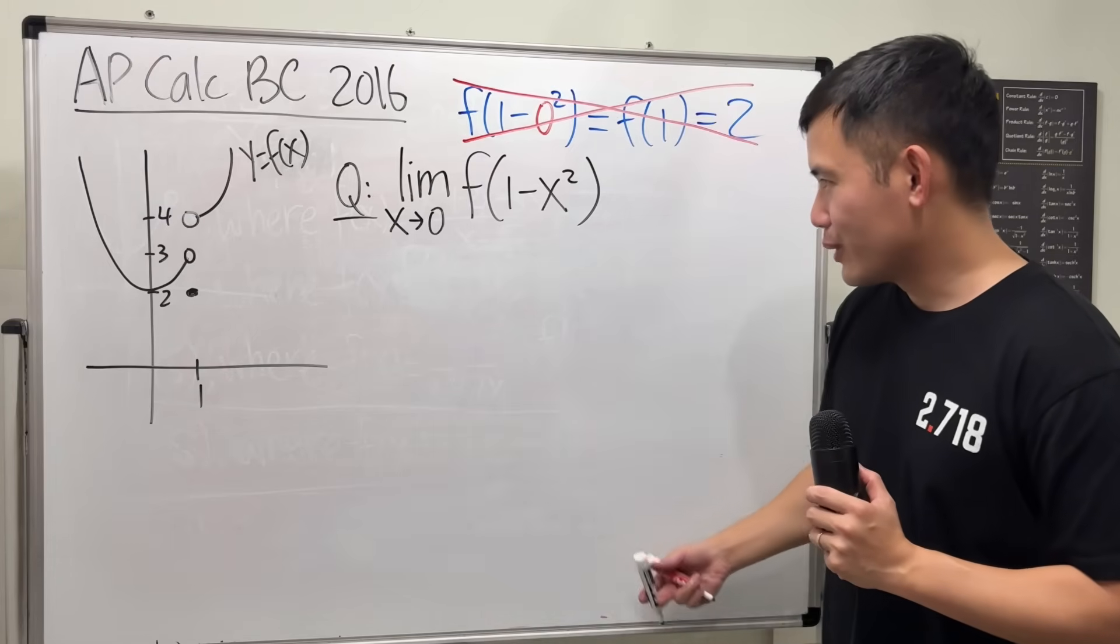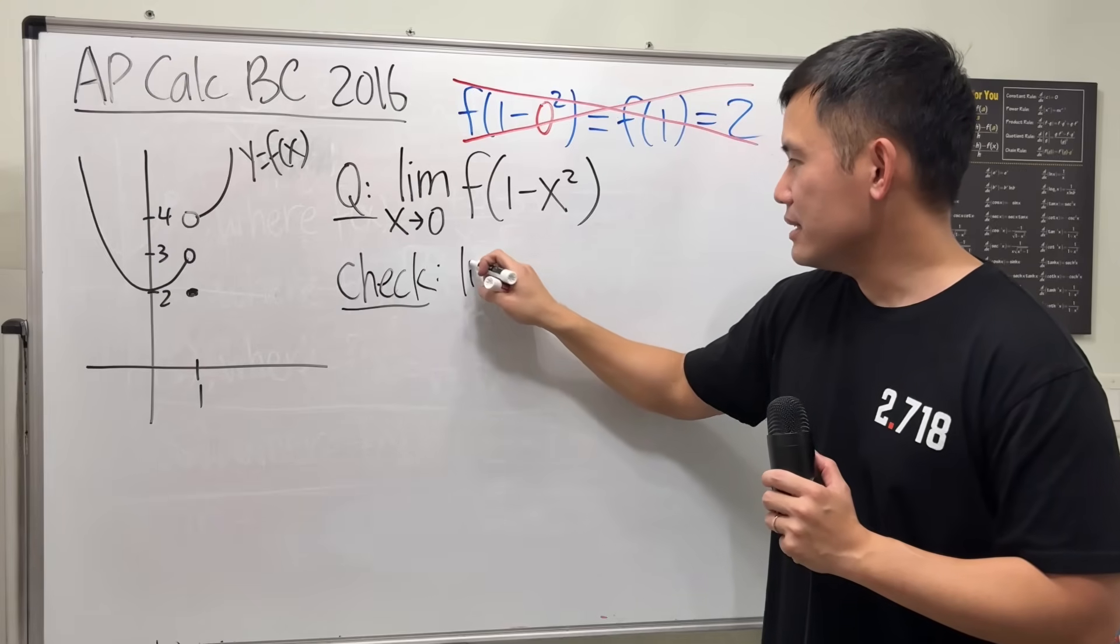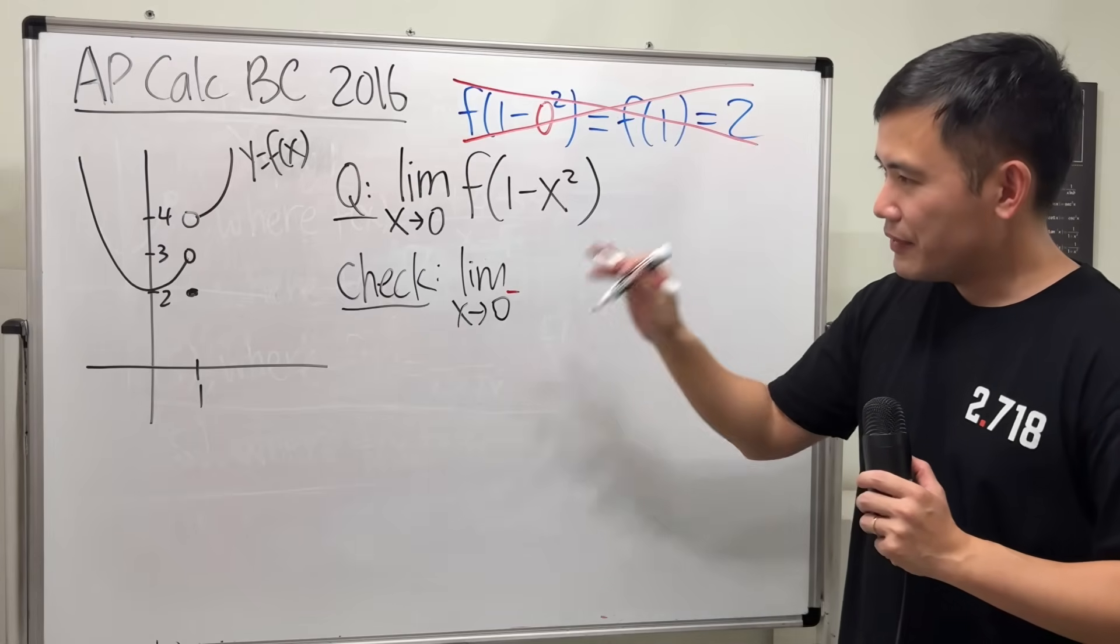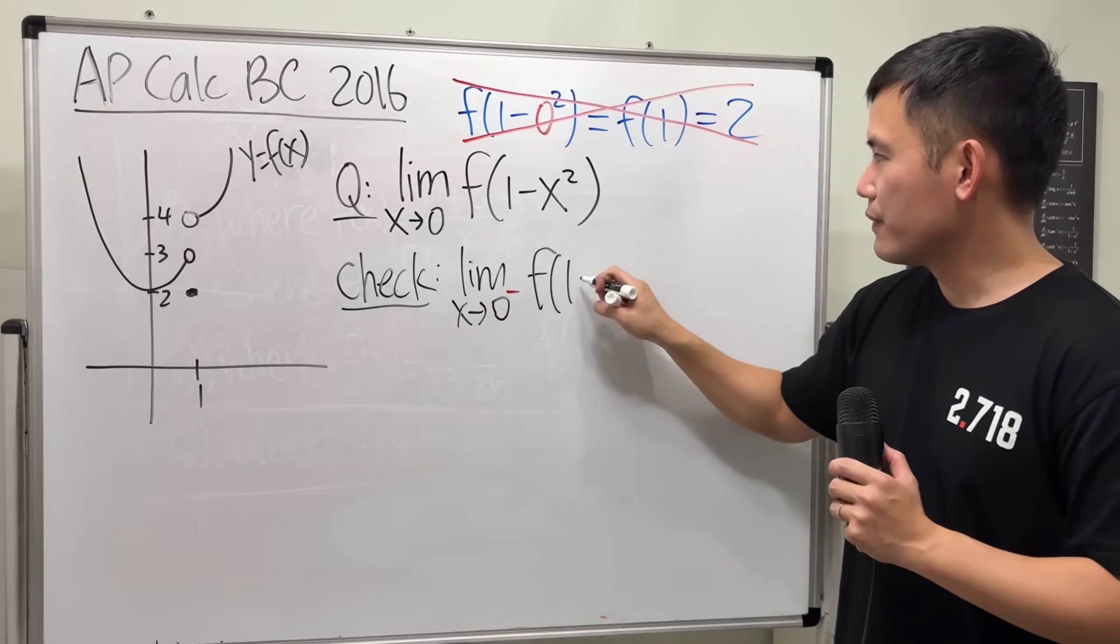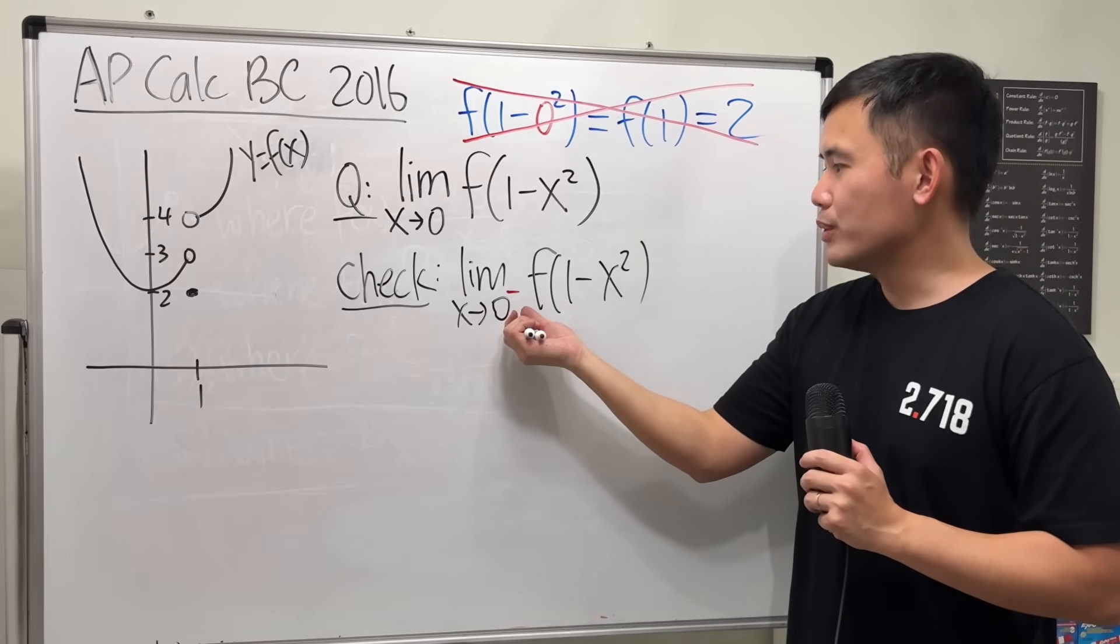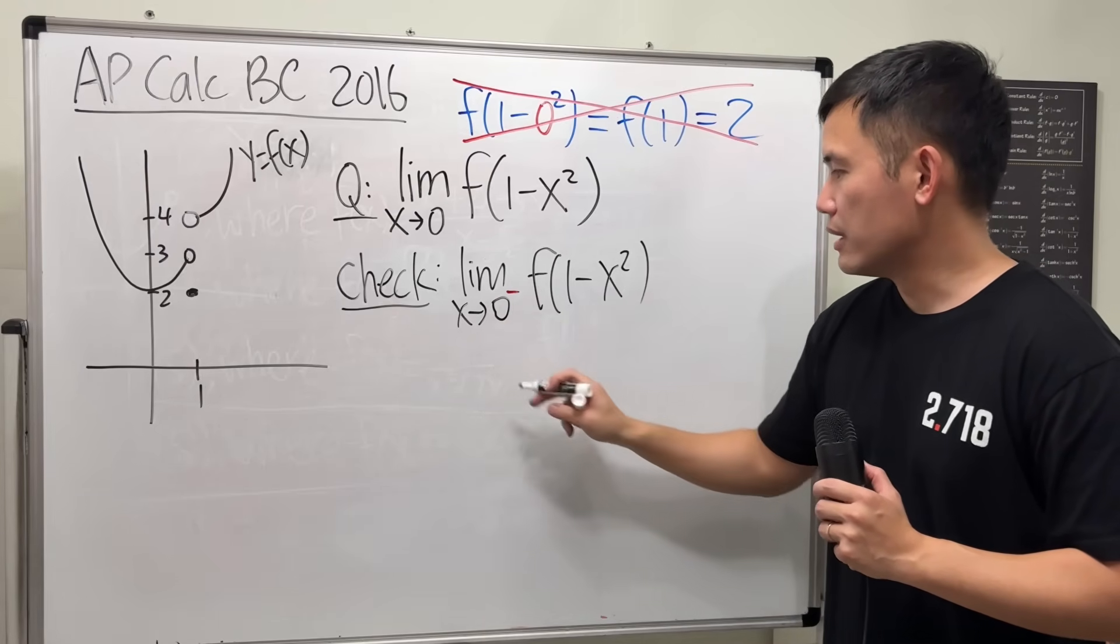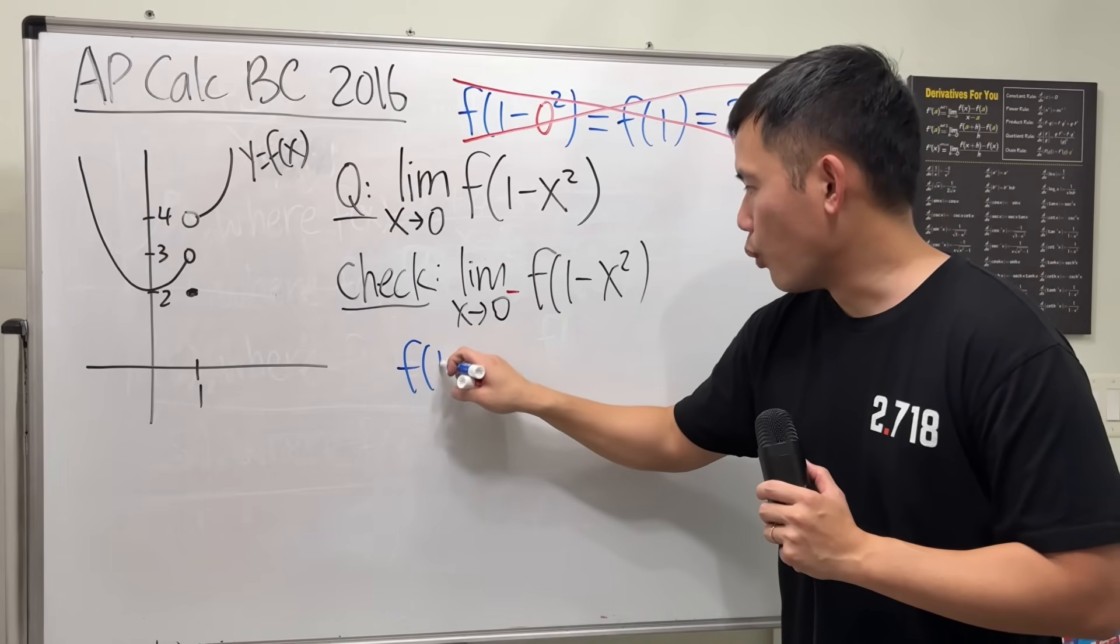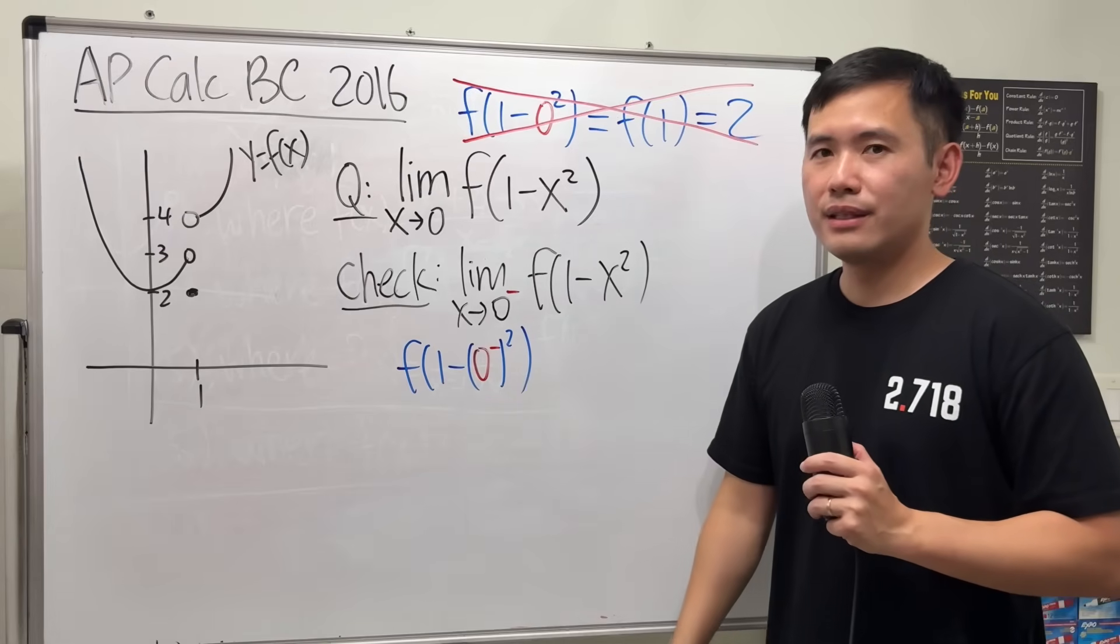So for this one right here, we first have to check the limit as x approaching 0. Let's do it from the left-hand side. So 0 is a minus of this right here first. And I'm just going to abuse the notation a little bit. So I technically had to plug in 0⁻ into here. So I will be getting f(1-(0⁻)²) like this.